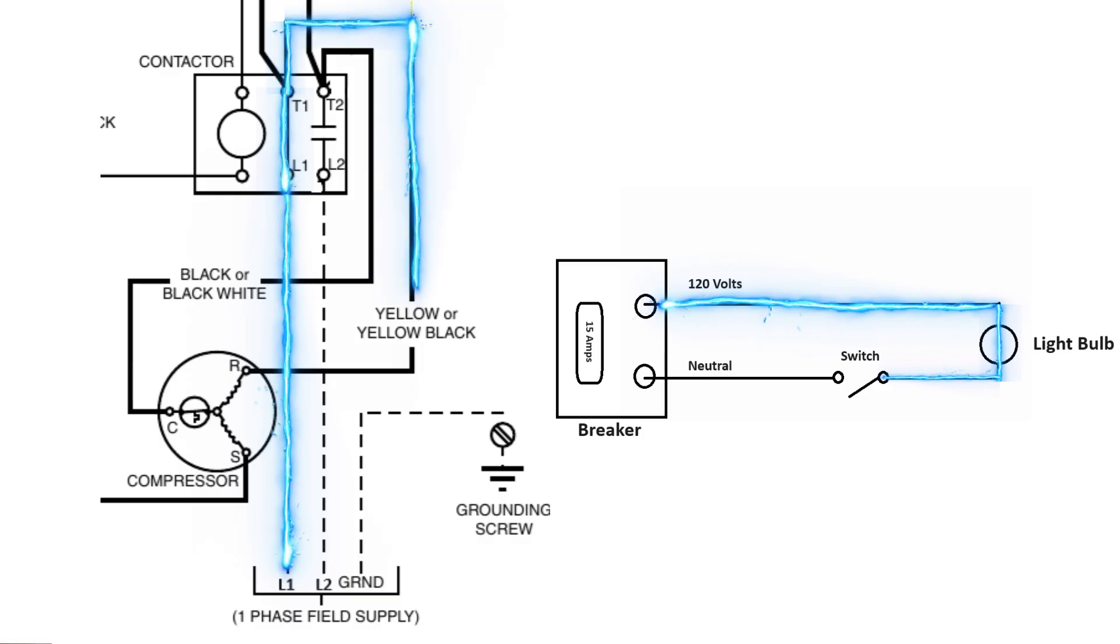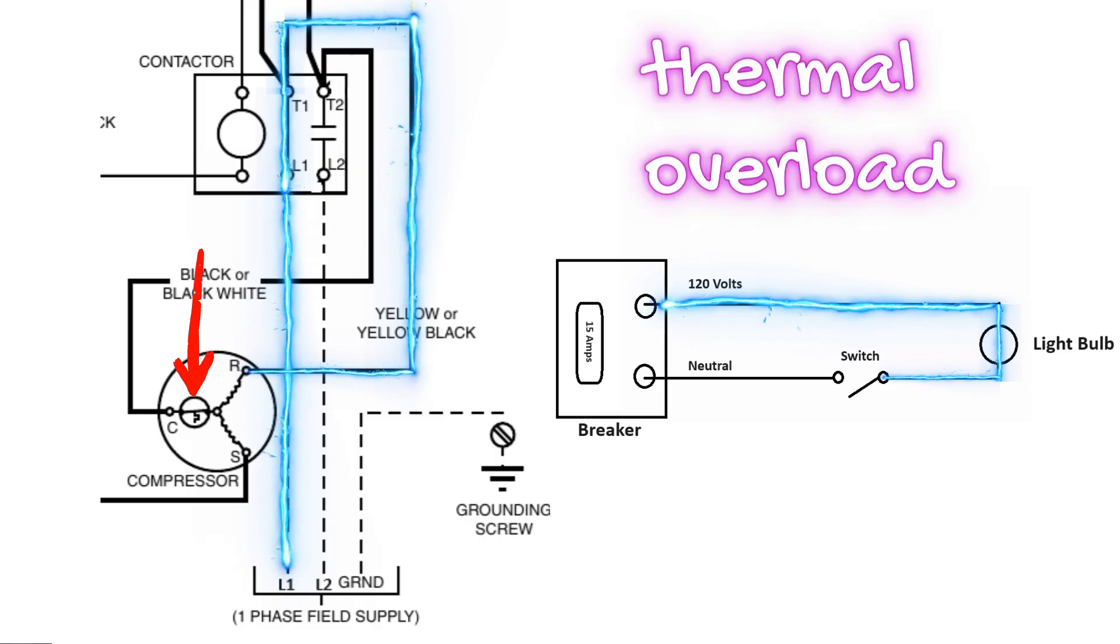And if we continue tracing this wire out, we can see it brings us all the way to the run winding on the compressor. So here we have a situation we spoke about earlier where we can have power up to a motor and the motor's not running because we do not yet have a complete circuit back to the power source. If we were to continue following this line, we can see it goes through our run winding. It goes onto our common winding and we come to a switch here.